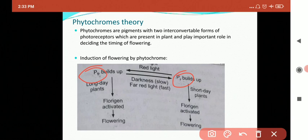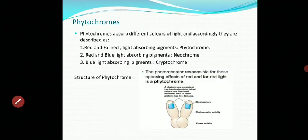It was observed that phy B inhibits flowering under both long and short photoperiods, but it is necessary for the expression of the promotive effect of phytochrome A. Phytochrome A is solely responsible for promotion of flowering by night break with white light, while phytochrome B plays a major role in detecting light quality, dark-light break, and day extension. Phytochrome consists of two identical proteins joined to form one functional molecule.